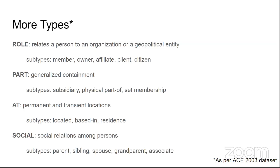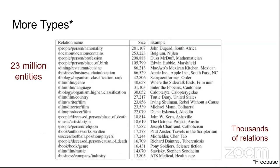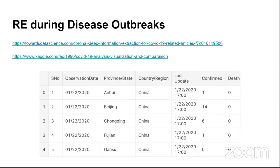The ACE dataset defines that a person can have a particular role, an organization can be a part of something, a city can be located at something, and there are social relationships among people such as parent and sibling. This dataset provides types and subtypes of relationships. Freebase is also an important dataset with approximately 23 million entities and thousands of different relations.